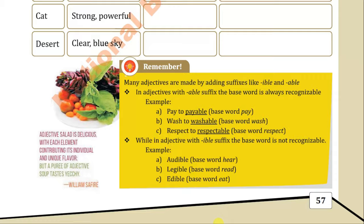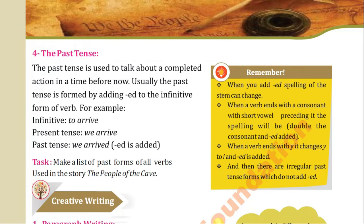Now come to the next page, page number 58, where the past tense is given. I will tackle all tenses in the series where we will talk about all the tenses. The past tense is used to talk about a complete action in a time before now. Usually the past tense is formed by adding -ED to the infinitive form of the verb. For example, infinitive 'to arrive': in present it becomes 'we arrive,' in past tense it becomes 'we arrived.' It's a very simple form.